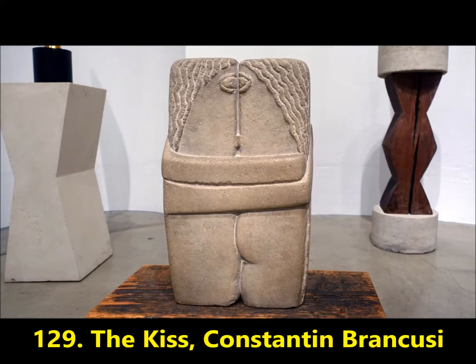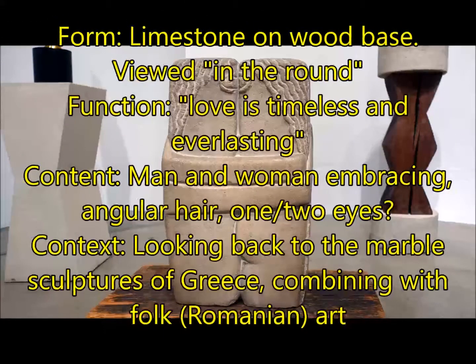Next up, we're going to see another Kiss by Constantin Brancusi. For form, this is limestone on a wood base — it's a sculpture, so it's supposed to be viewed in the round, meaning you're supposed to be able to look at it from all angles. For function, this is saying that love is timeless and everlasting, just like the materials from which it is made. That stone is going to last forever.